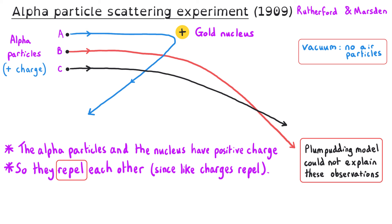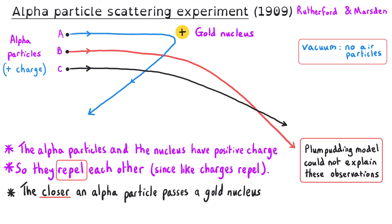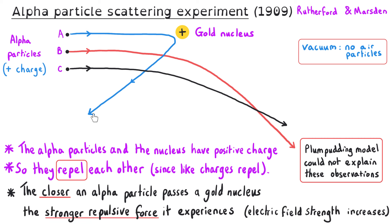Therefore it was thought that the nucleus must be very, very small, and be where all of the positive charge is found. The closer an alpha particle passes to a gold nucleus, the stronger the repulsive force it experiences — or we could say the electric field strength will increase. We can see that from the three different curved paths of three different alpha particles, A, B, and C. Particle A passes closest to the nucleus and feels a stronger repulsive force than the other two, so it is deflected more and follows a more curved path.